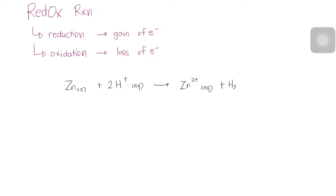Now, look at the following reaction that occurs when zinc metal is added to a strong acid. Assigning oxidation numbers to all species in the reaction, we have the following balanced redox reaction.